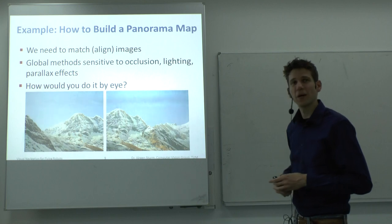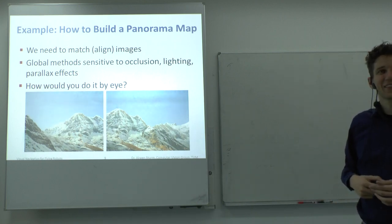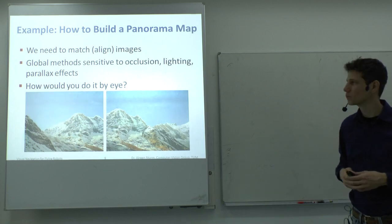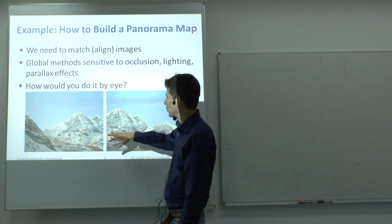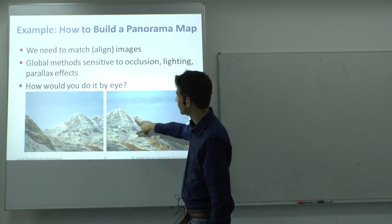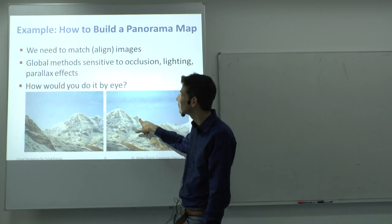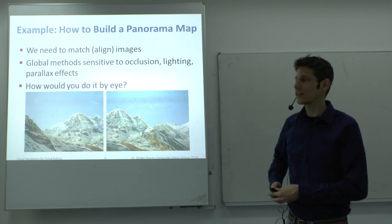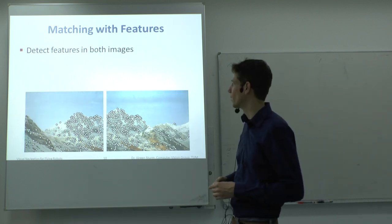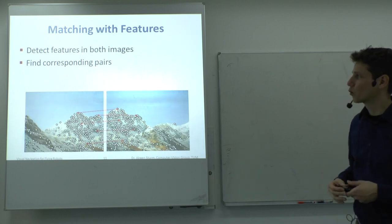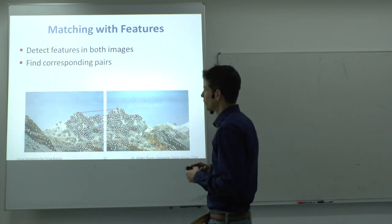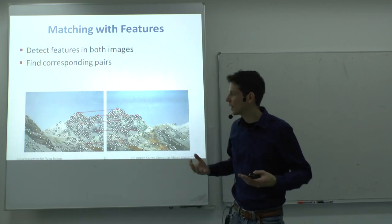If you had to match two images by eye, you would look for distinct points you can easily recognize — like a mountaintop — and check if the same feature appears in both images. That's actually a good idea: detect features in both images, for example Harris corners from last week, find corresponding pairs of features, and then in principle align them. The first problem is that we need to detect the same feature points in both images, so the corner detector should be independent of camera orientation and illumination.